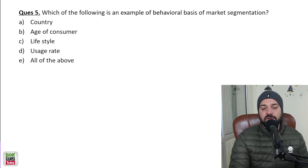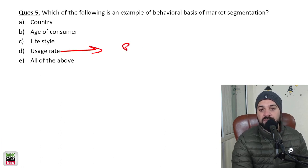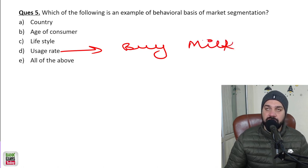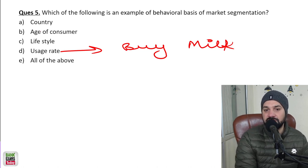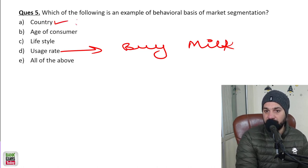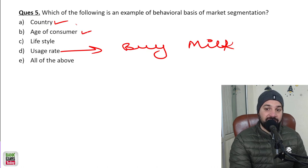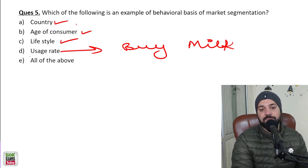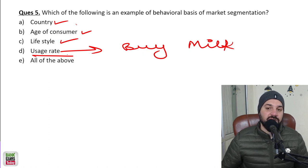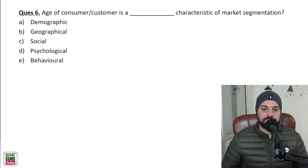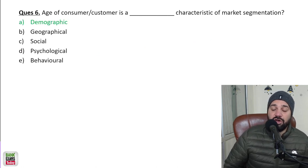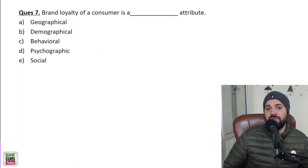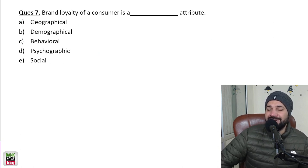Usage rate — how often you buy milk, how often you buy bread — is a behavioral basis of segmentation. So: country is geographic, age of consumer is demographic, lifestyle is psychographic, and usage rate is the behavioral basis. Age of customer is a demographic characteristic.